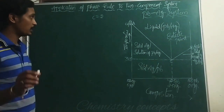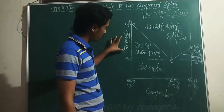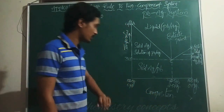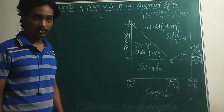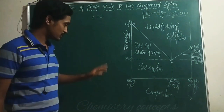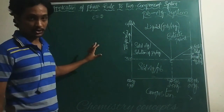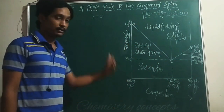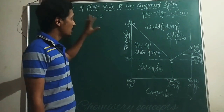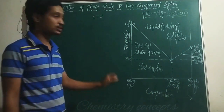In the lead and silver system you can see two differences: we are considering temperature and composition. That is composition on the x-axis and temperature on the y-axis. We are not considering pressure. Among the three independent variables — composition, temperature, and pressure — if you consider pressure it becomes three-dimensional, which cannot be represented on a flat diagram. So we keep pressure constant.